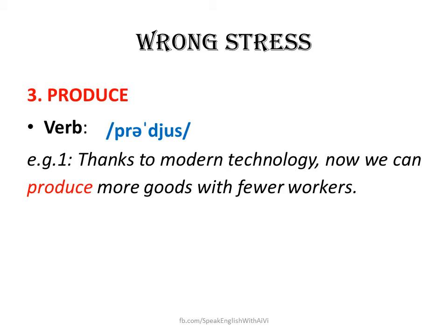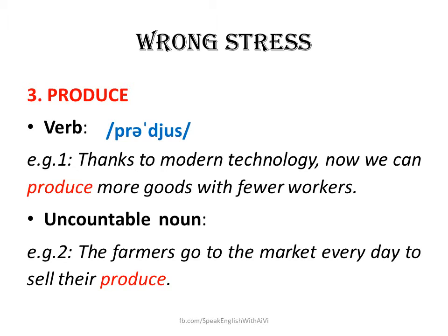Now we have another word, a very familiar word, which is produce. Produce, as you know, is a verb. As in the example: 'Thanks to modern technology, now we can produce more goods with fewer workers.' But did you know that this word is also a noun, an uncountable noun? In this case, it's pronounced produce. For example: 'The farmers go to the market every day to sell their produce.' So be careful — produce as a verb and produce as a noun.